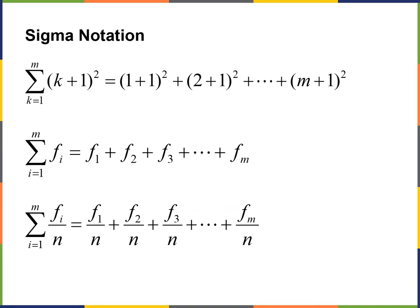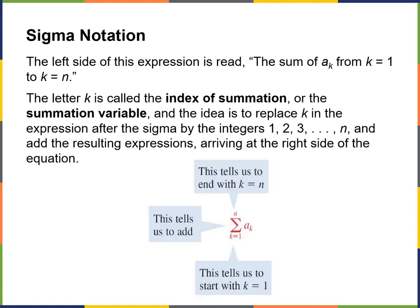Here's sigma notation. The left side of this expression is read as 'the sum of aK, from K equals 1 to K equals n.' The letter K is called the index of summation. The idea is to replace K by the integers 1, 2, 3, and so on, and add the resulting expressions, arriving at the right side of the equation.